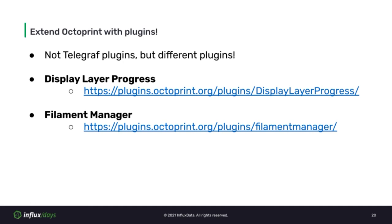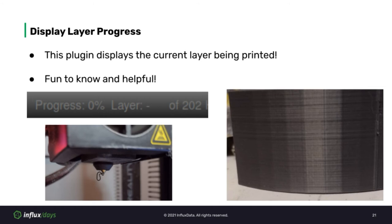OctoPrint also has a large selection of great plugins that can add cool new features. I want to cover two plugins that will help expose interesting data we can gather in Telegraph's external plugin: Display Layer Progress and Filament Manager. It can be fun — and useful — to know what layer your object is at. For example, if you want multiple colors in a single object, there's a trick where you pause the printer at a certain layer and switch out the filament to create cool effects. So it's useful to know what layer you're currently on so you know when to switch filament.